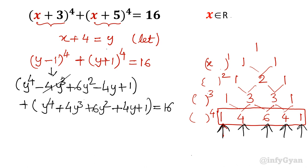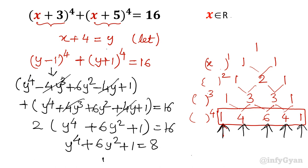Cancel which terms you can cancel. The y^3 and y terms will get cancelled out. What is left? 2 times (y^4 + 6y^2 + 1) equals 16. Or in other words, y^4 + 6y^2 + 1 equals 8. Take 8 to the left side, so the equation will be y^4 + 6y^2 - 7 = 0.